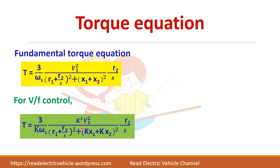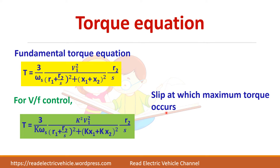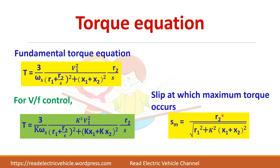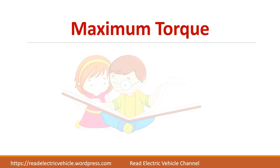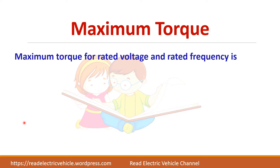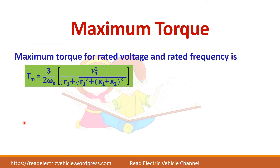To find the maximum torque, first find the slip at which maximum torque occurs by differentiating torque with respect to slip S and equating to zero. This gives the condition for maximum torque. Substituting that slip value back gives the maximum torque equation. The maximum torque for rated voltage and rated frequency was already derived in the induction motor for drives video.